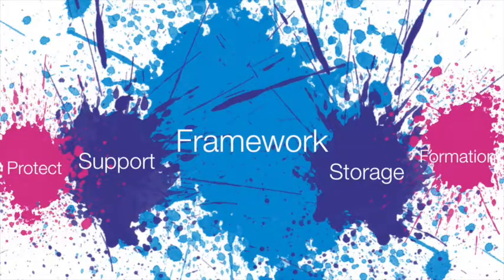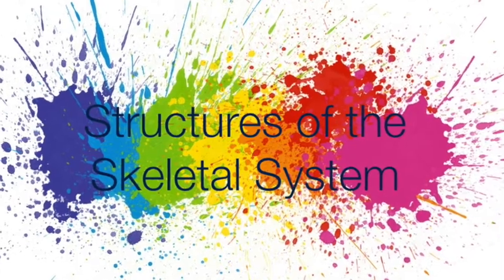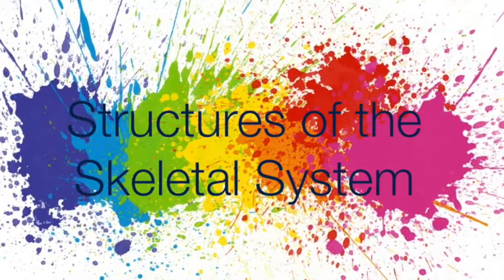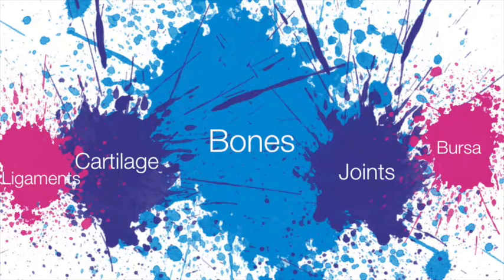The skeletal system has many important functions. Bones act as a framework of the body and support and protect the internal organs. Joints in conjunction with muscles, ligaments, and tendons make possible the wide variety of body movements. Calcium required for normal nerve and muscle function is stored inside the bones. Red bone marrow, which is located in spongy bone, has an important function in the formation of blood. The structures of the skeletal system include bones, cartilage, ligaments, joints, and bursa.